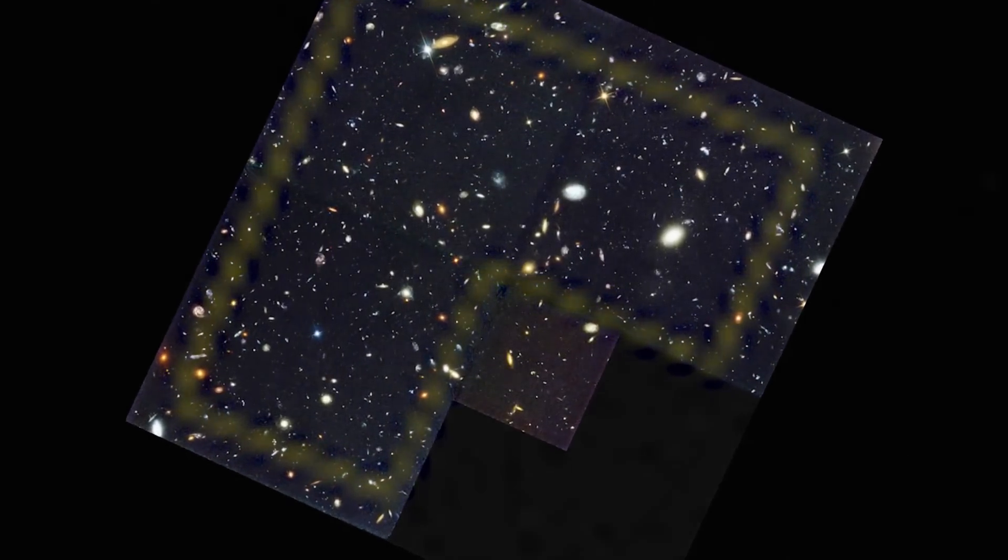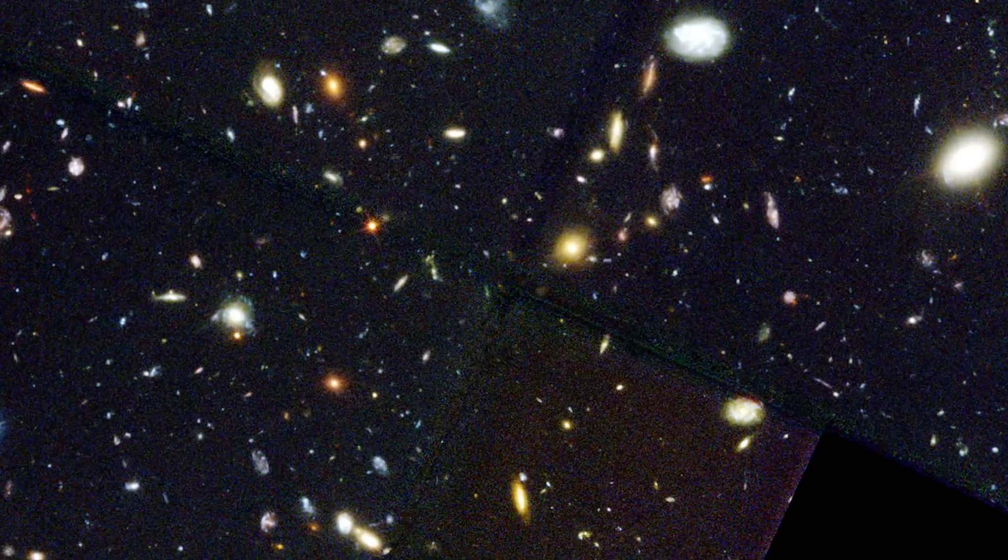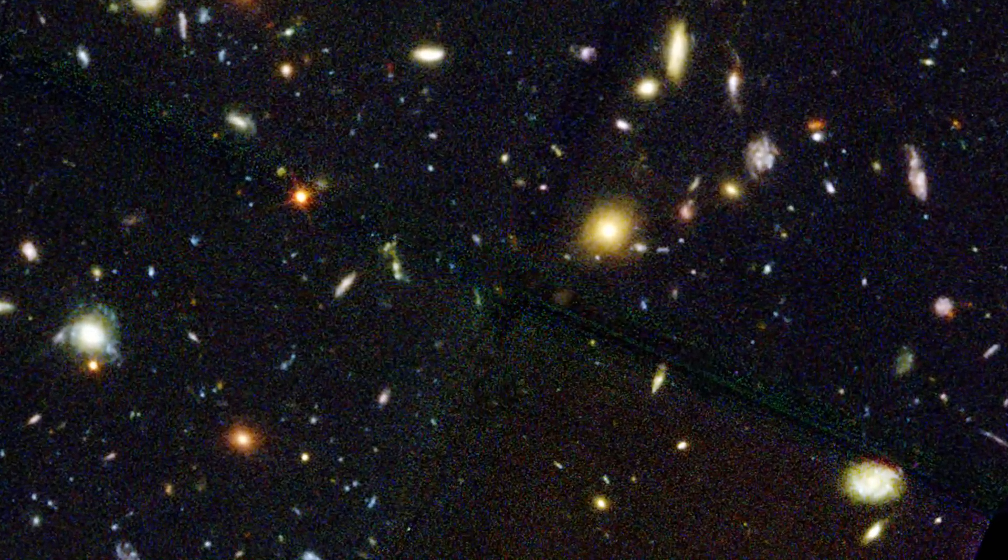Every point of pale yellow and red light in this image is an entire galaxy, each one with billions of stars. This is the original Hubble Deep Field, one of the most important images ever taken. After this stunning image, Hubble made more Deep Fields.